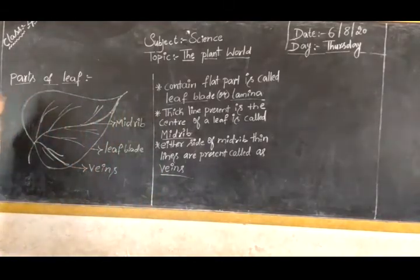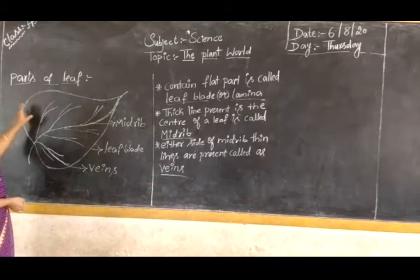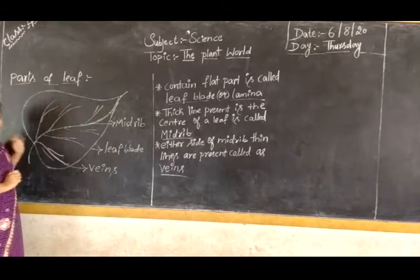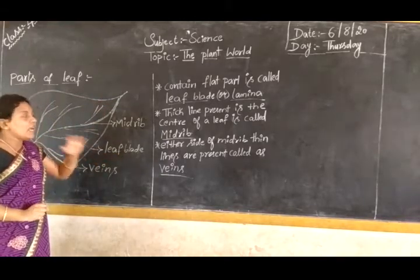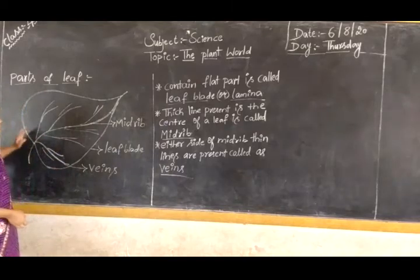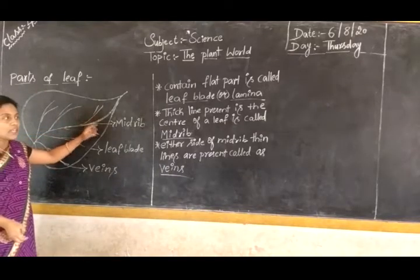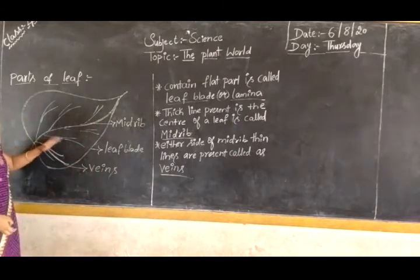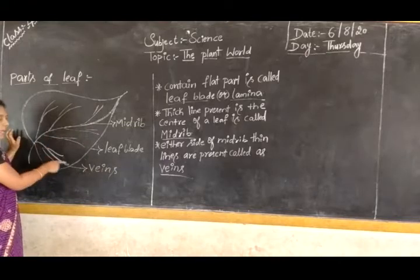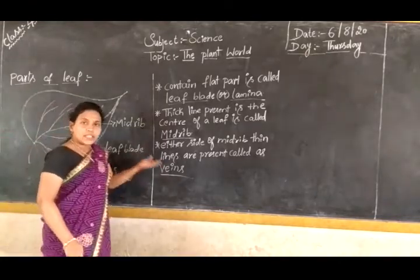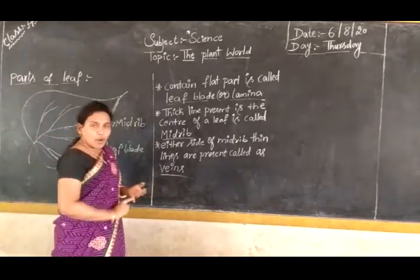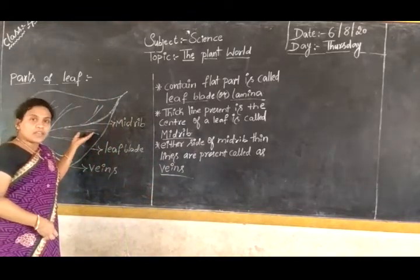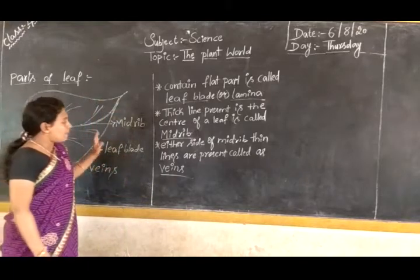Once again, I am repeating the parts of the leaf. The leaf contains a flat part that we call the leaf blade or lamina. In the centre, the leaf contains a thick line which we call the midrib. On either side we will see thin lines called veins, which absorb water and minerals from the soil and carry them to the leaf and then to the other parts of the plant.